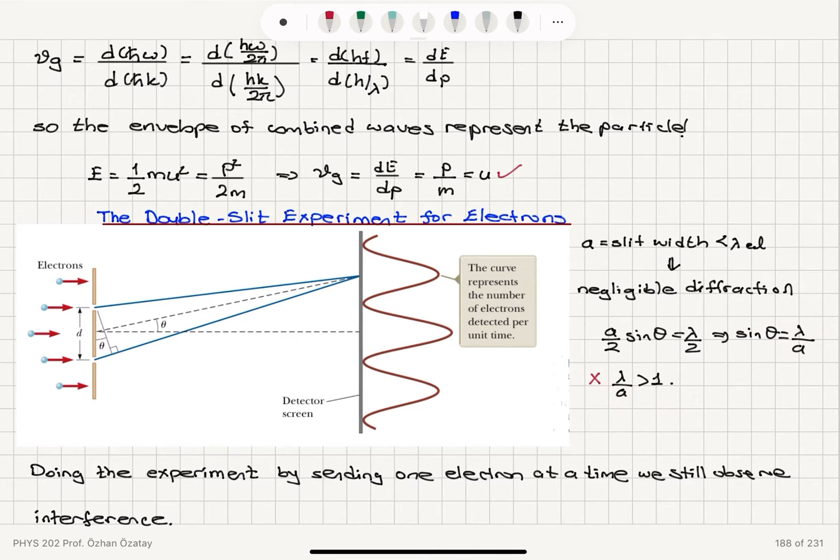So if the slit width is less than lambda, a less than lambda, this would be greater than 1, so we wouldn't observe this. So what we would like to have is to have a slit width comparable to the wavelength or slightly greater than the wavelength.